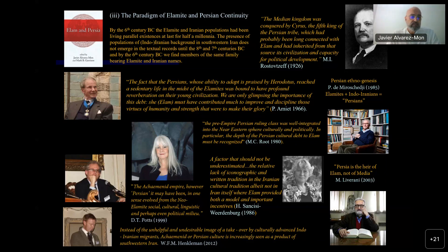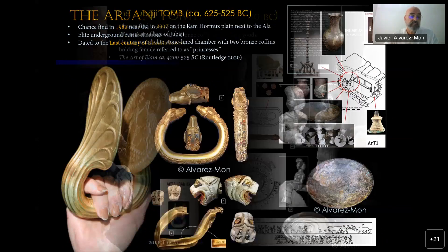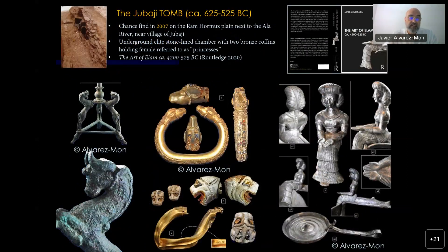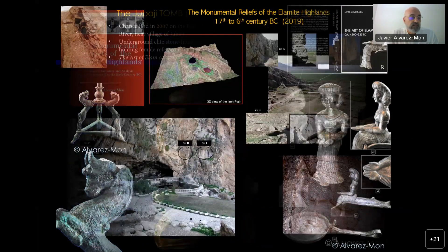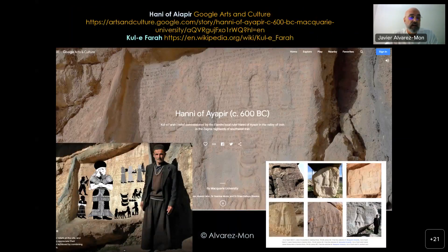My own contribution to this conversation has been through the lens of Elamite art — in particular, the chance finds of the elite tombs of Arjan discovered in 1982 and of Yubachi discovered in 2007, both dated to the seventh and sixth centuries BC. In addition, the publication of the Elamite monumental highland reliefs has provided substantial support to the notion that Persia inherited from Elam critical artistic and ideological tenets.